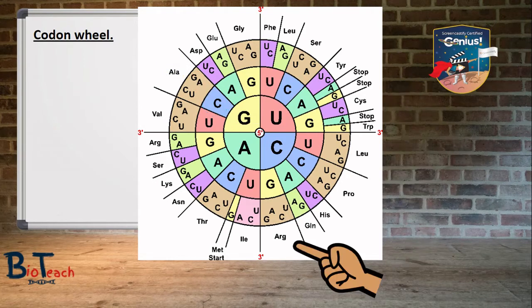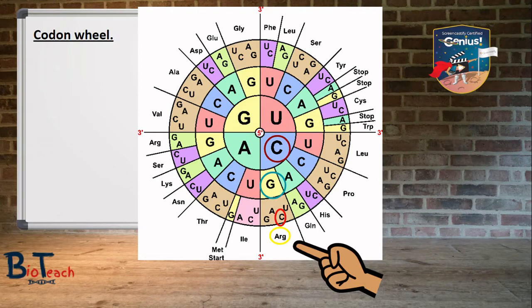Let's try another example. If you have C, then G, then C again, that would give you arginine. I do really like this activity in class — it's super fun to practice coding for proteins and usually helps you understand base pairing with a bit more ease. Feel free to pause the video now and practice a few of your own.